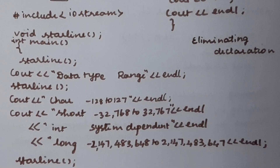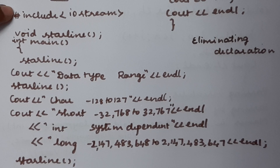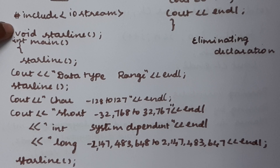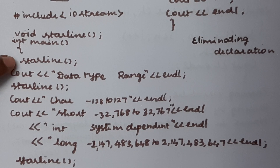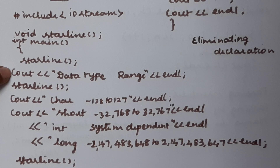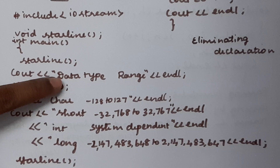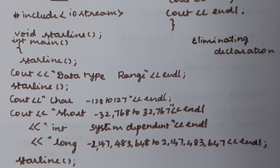Here we have the statement '#include iostream', which is the header file you need to include for any C++ program. We have the function declaration statement 'void starline' — starline is a user-defined function and we have declared it. Each function declaration statement must be terminated by a semicolon. Then we start with the main function, and inside the main function we have called the user-defined function 'starline' — this is the function calling statement. We also have a cout statement which is used to display any output string included inside double quotes, followed by endl.